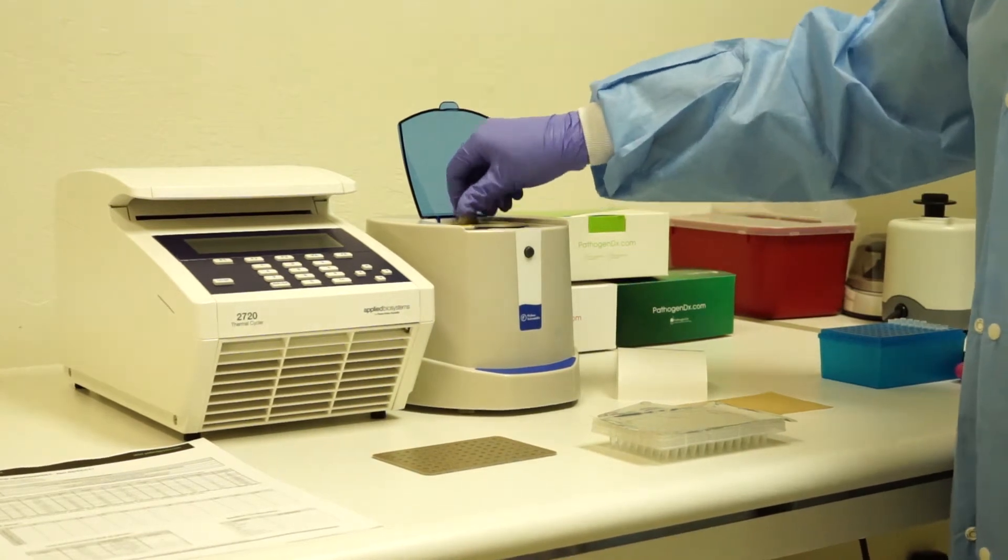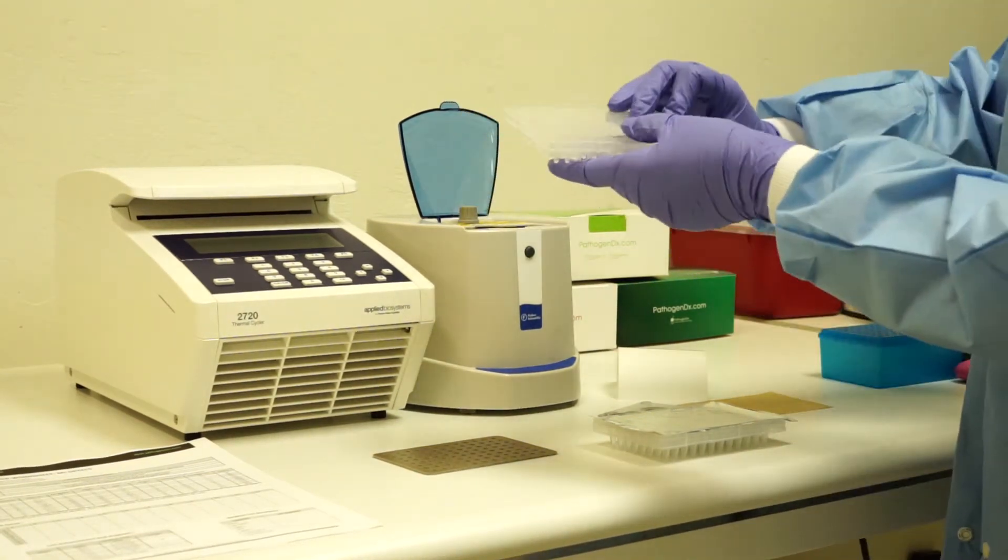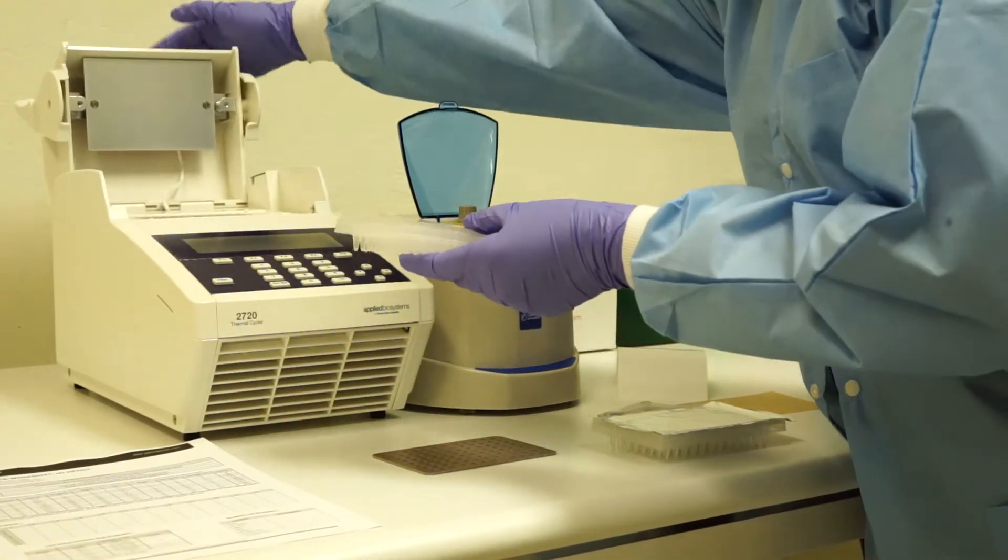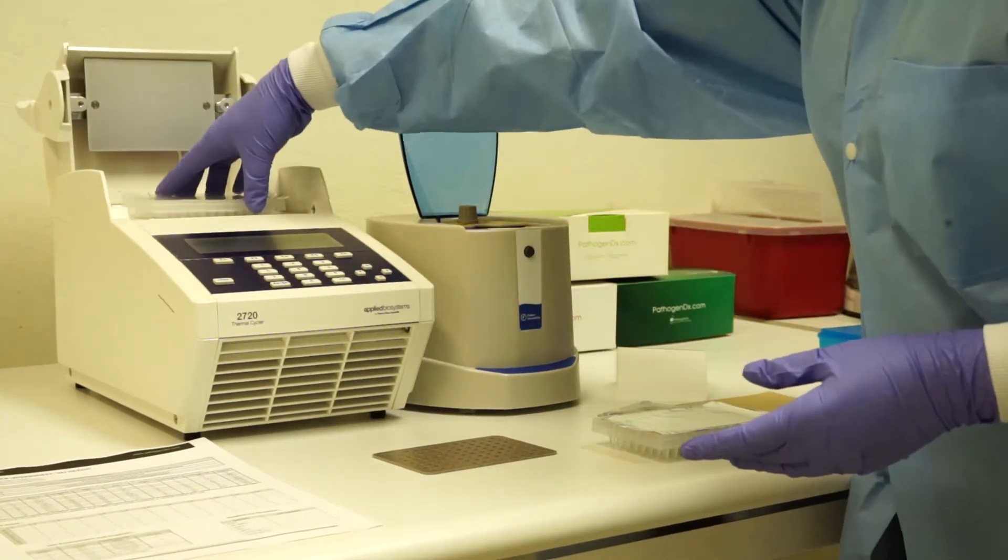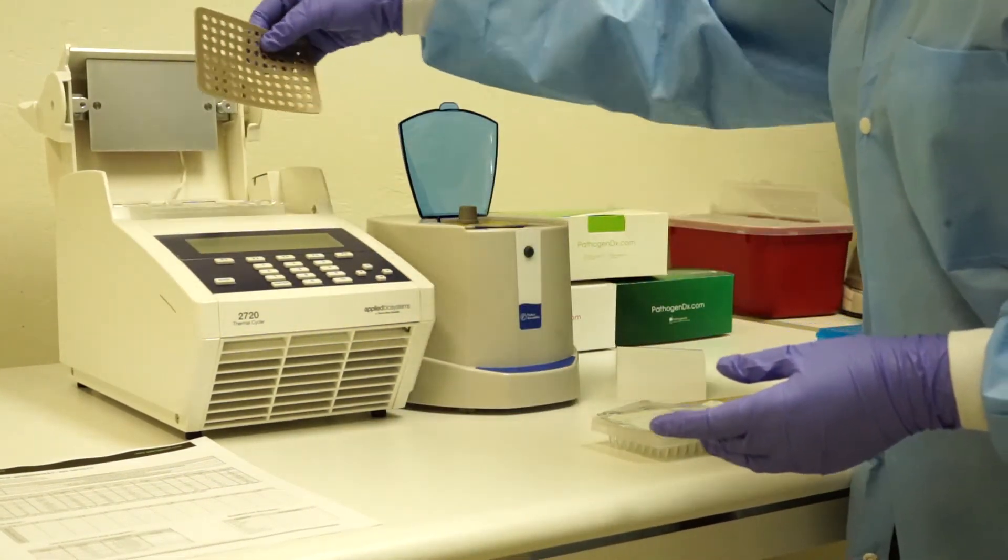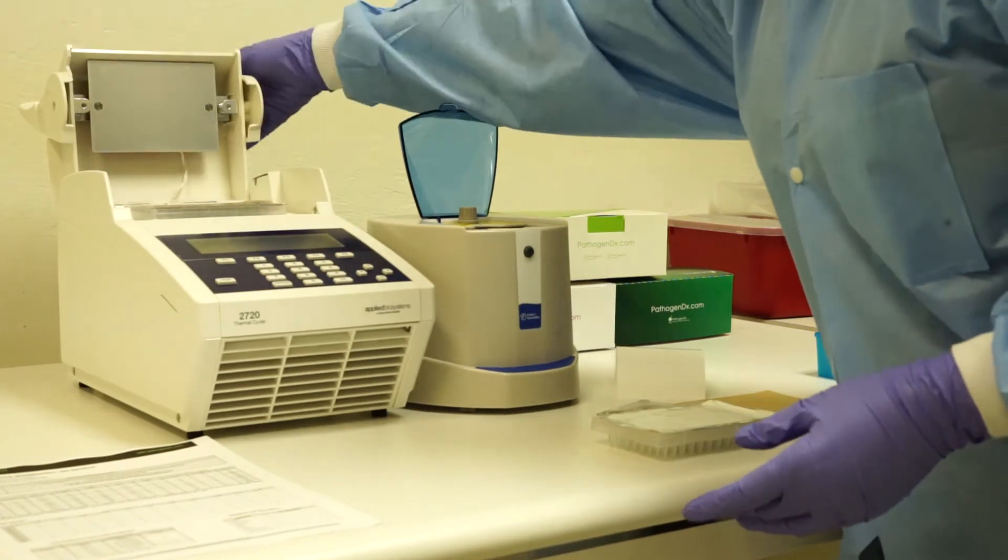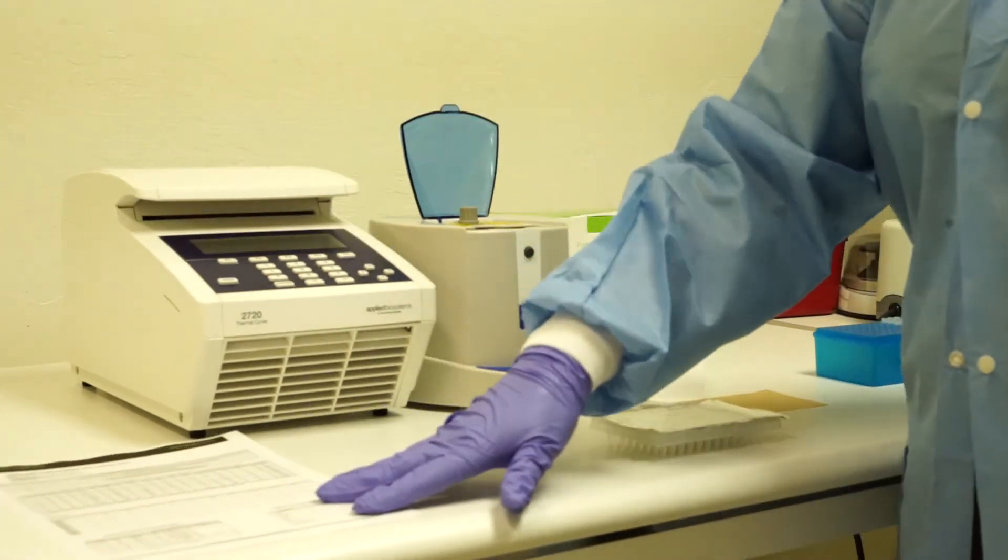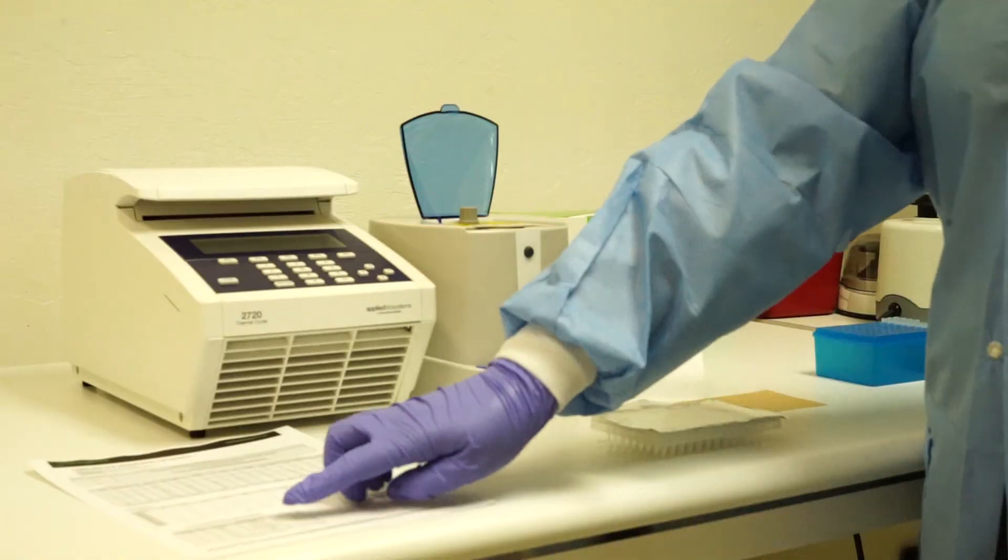Once the plate has spun, place your labeling PCR plate into your thermal cycler with the pressure pad brown side up and follow the program set on the labeling PCR worksheet.